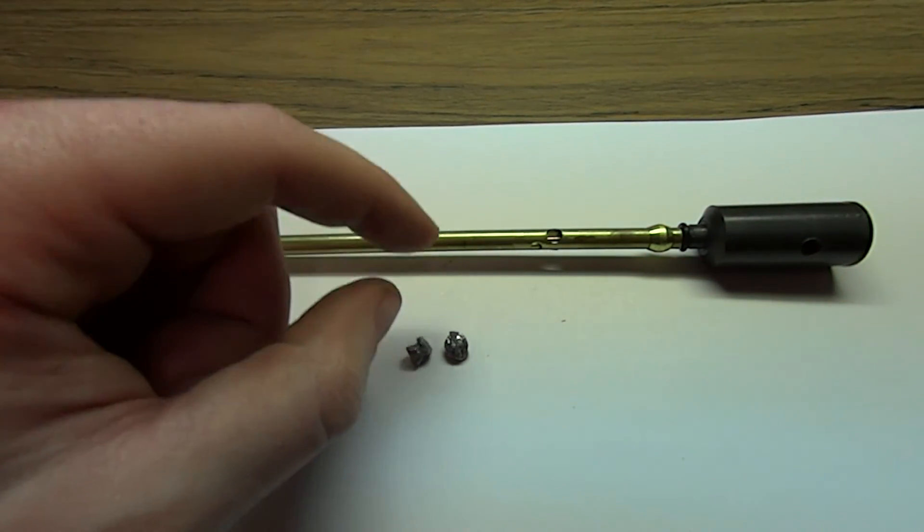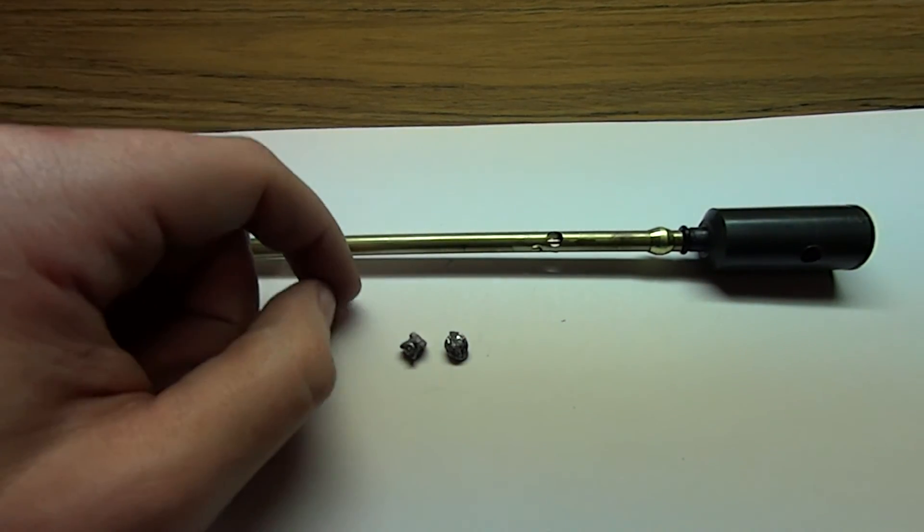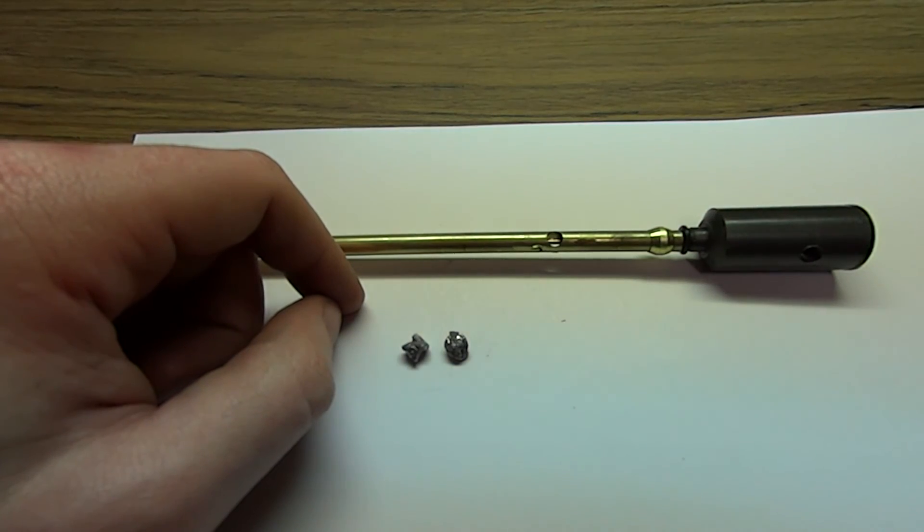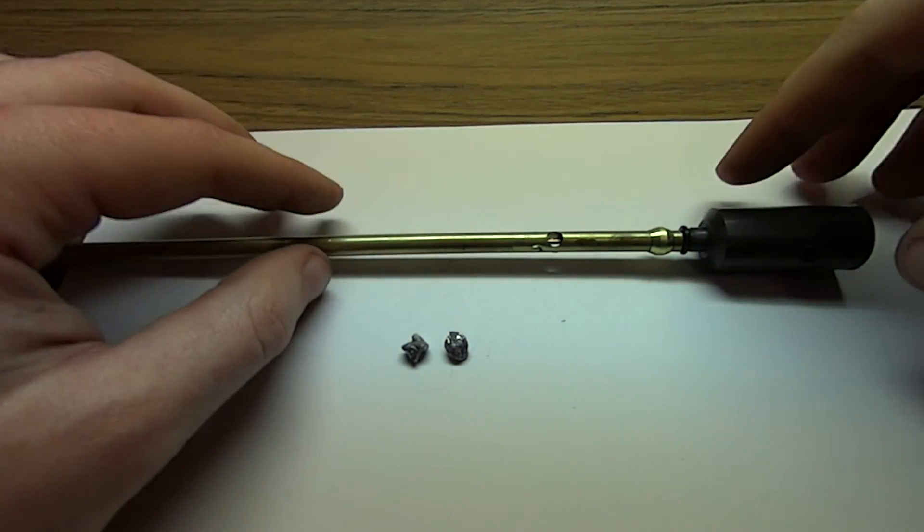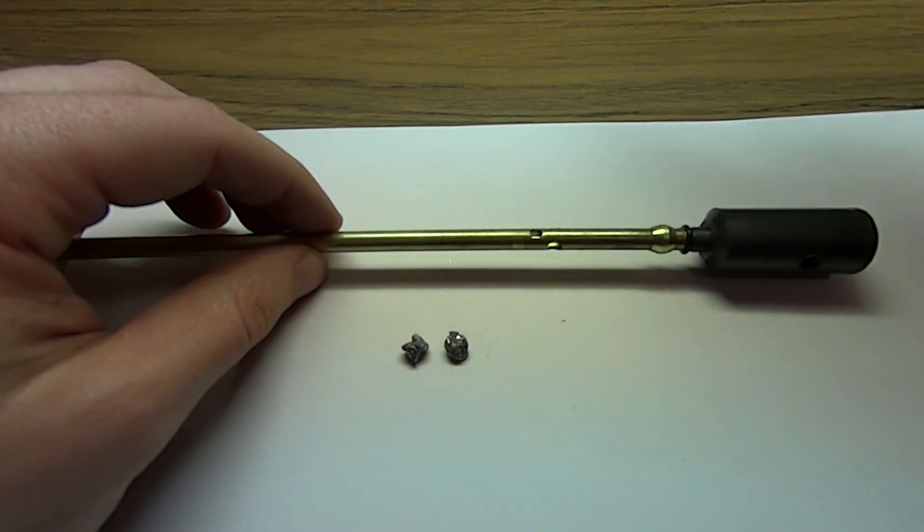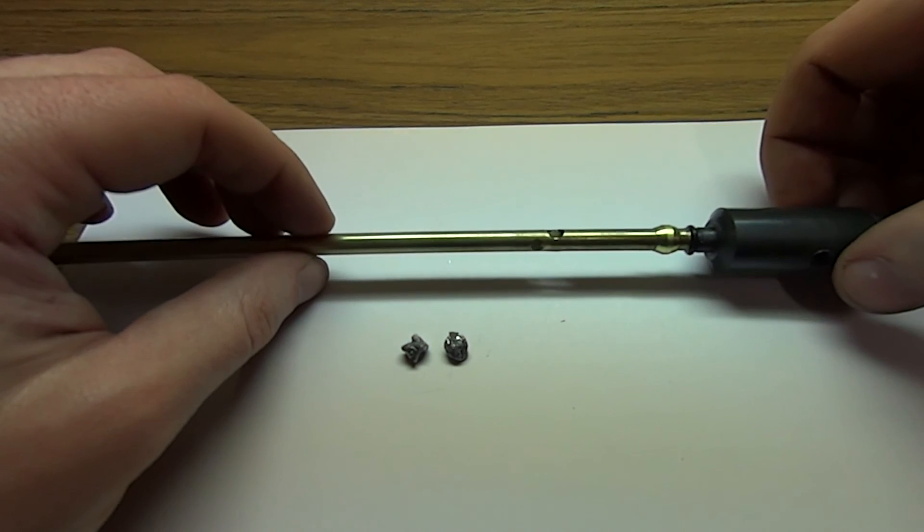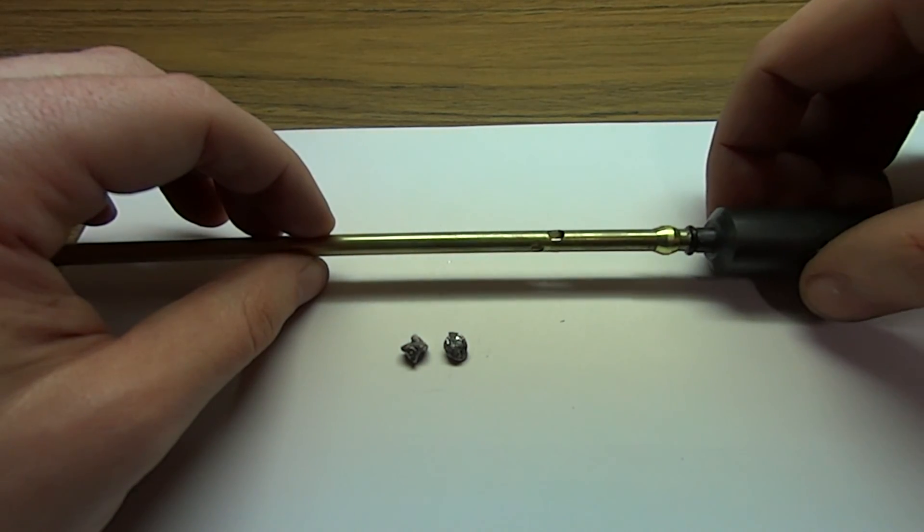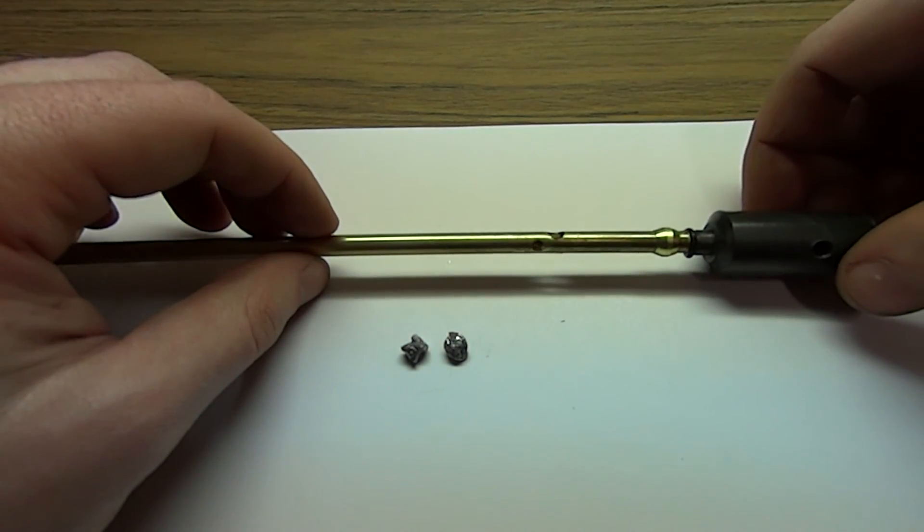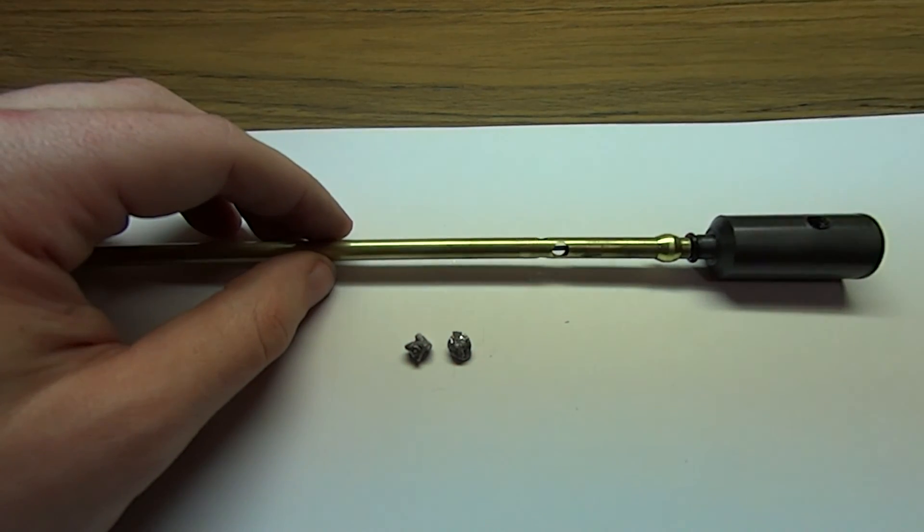And my homemade one, my homemade gun actually produced more visible damage. So, you know, off of that limited test, mine seems to be more powerful than a readily available mass-manufactured 1,100 feet per second pellet gun. So anyway, enough babbling.